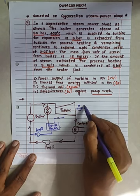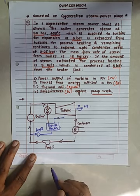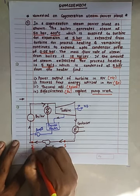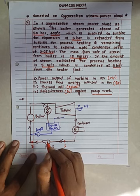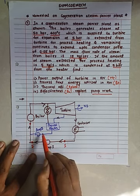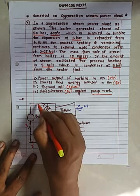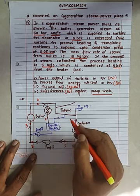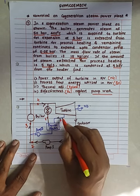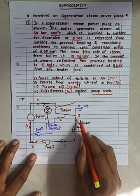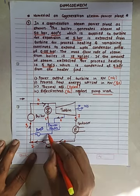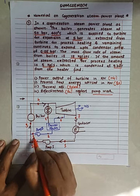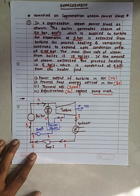Now I am locating the different thermodynamic state points. State point one, state point two, state point three is where the condensates from both pumps mix. Point four is after the boiler, point five, point six, point seven after the turbine, and point eight is after the process heater — the fluid coming from the process heater is point nine. These are the different state points located on the diagram.